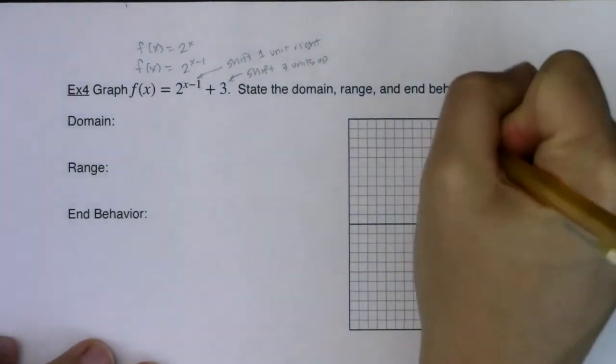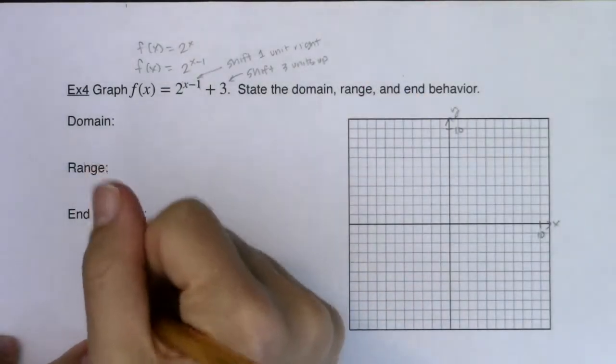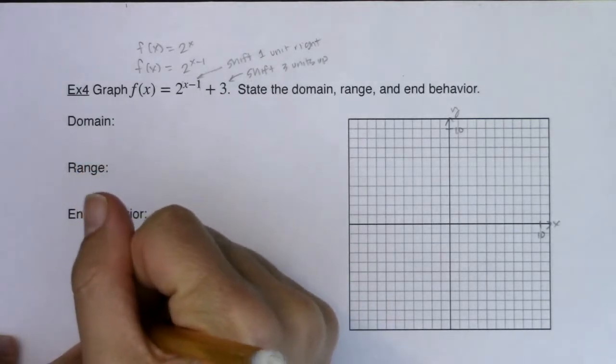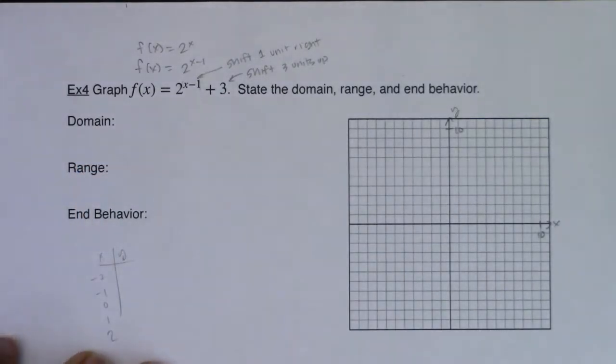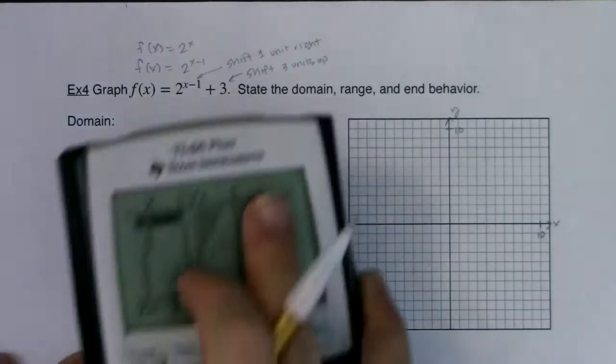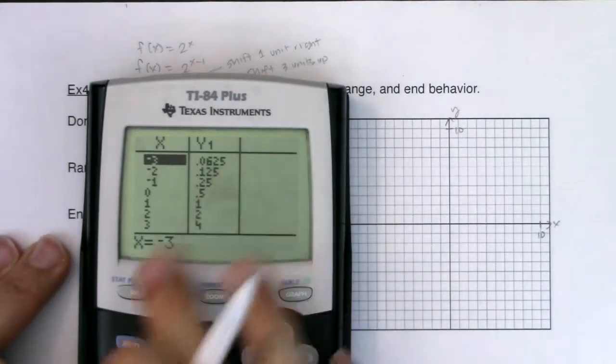And again if you want to make your t table, if you want to just do a little x, y, negative 2, negative 1, 0, 1, 2, and get some y values, go for it. I'm going to use technology. And I want to show you how I'm going to do this.